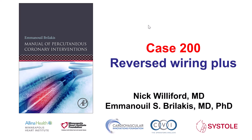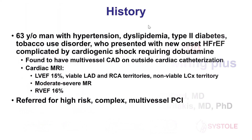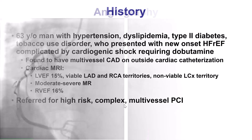This is a case illustrating some advanced techniques for using the reversed wiring technique. The patient was a young man who presented with cardiogenic shock, had a low ejection fraction of 15% with viability in the LAD and the right coronary artery territory, and he was sent for multi-vessel PCI after being turned down for coronary bypass.